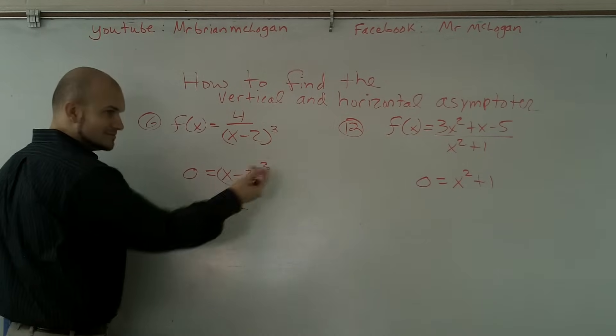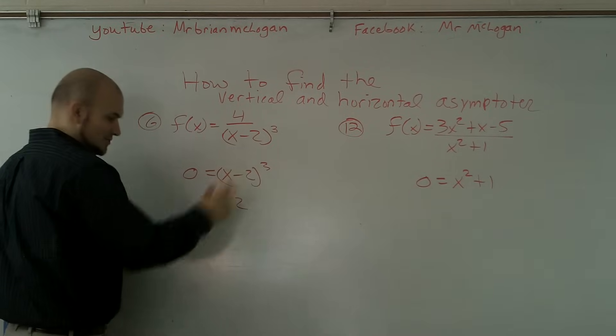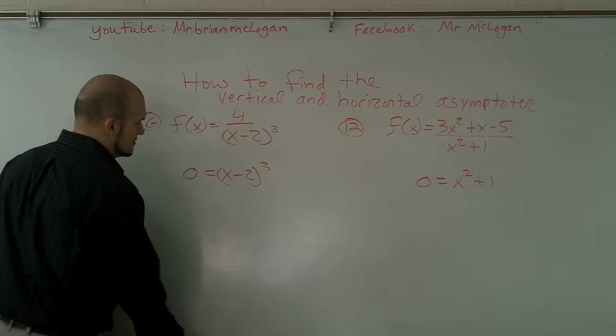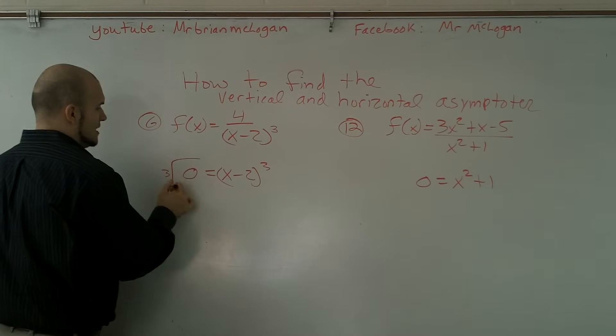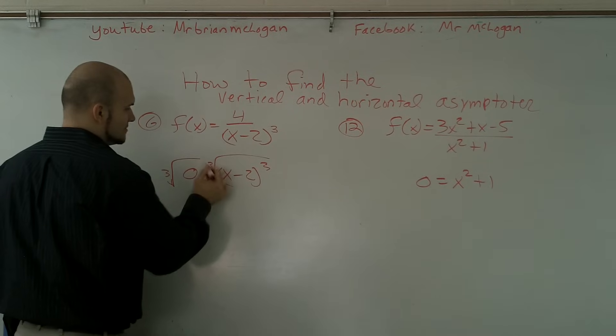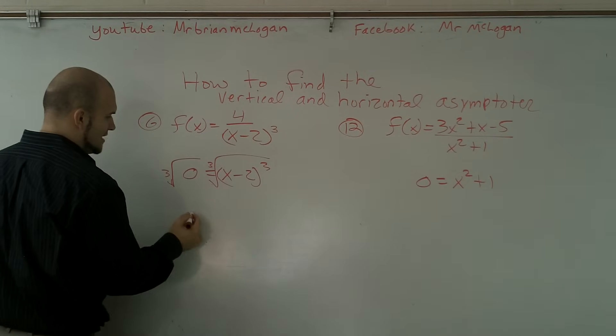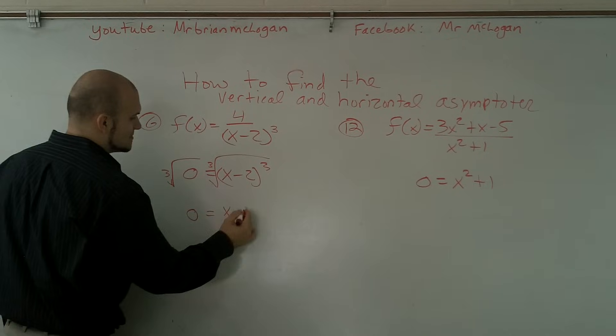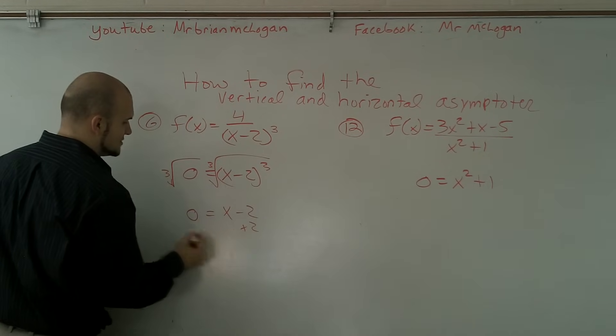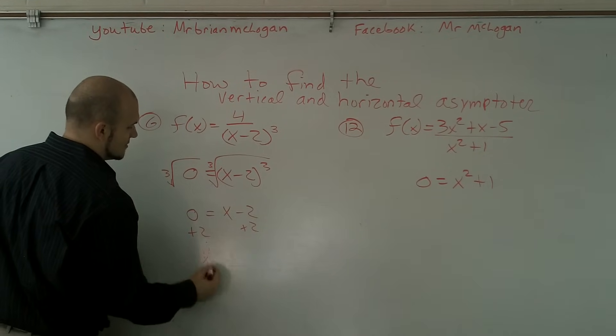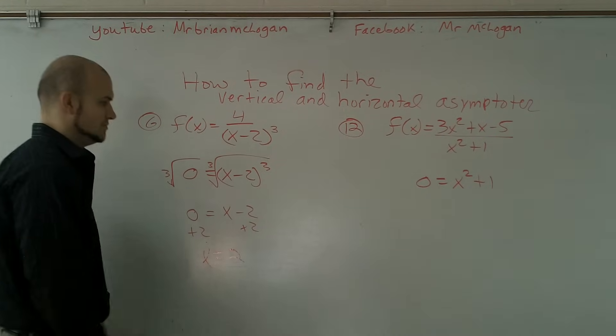Do you guys need to see that? I'll just show it. Take a cube root on both sides to get rid of the cubed. Therefore, then you have zero is equal to x minus two. Add a two on both sides. x is equal to two.